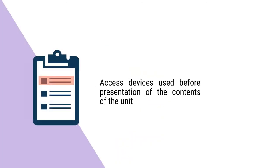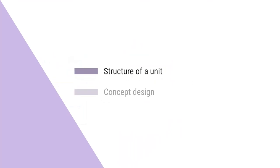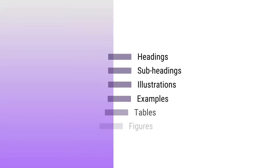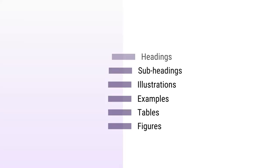Self-learning materials are also important because we have access devices throughout the materials. Access devices make the self-learning materials usable and easily accessible to the learners. We find access devices at the beginning, in the middle, and after the study of the unit. At the beginning of the unit, they could be the structure of the unit, a concept design, a set of objectives, and an introduction — all these things set the tone for the study of the unit. During the study of the unit, they are the headings, the subheadings, the illustrations, the examples, tables, and figures which help the learners understand the concepts and ideas very clearly.